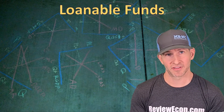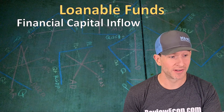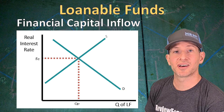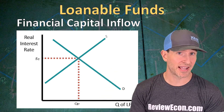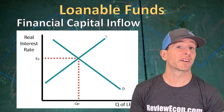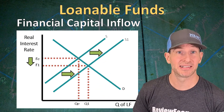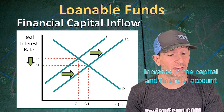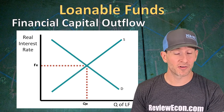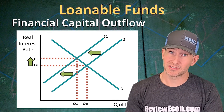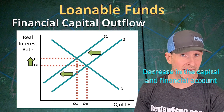Next, we'll look at the impact of capital inflows and outflows on the loanable funds market graph. In this graph, the quantity of loanable funds is on the X-axis and the real interest rate is on the Y-axis, with an upward-sloping supply curve and a downward-sloping demand curve. A financial capital inflow shows up on the supply curve as an increase in supply, causing the real interest rate to decrease; on the balance of payments, this appears as an increase in the capital and financial account balance. A financial capital outflow shows as a decrease in the supply of loanable funds, causing the real interest rate to rise, and shows up as a decrease in the capital and financial account within the balance of payments.